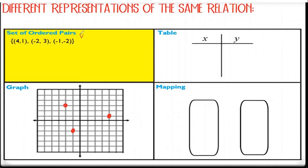So that is how I represent this relation as a graph — from ordered pairs to a graph. Now I'm going to write it as a table. A table is really easy. All we do is write the ordered pairs next to each other: four and one, negative two and three, and negative one and negative two. This is one reason why this unit is so easy — we're literally just rewriting stuff.